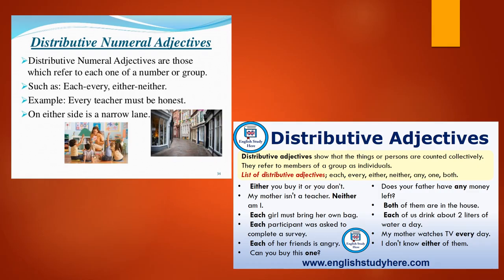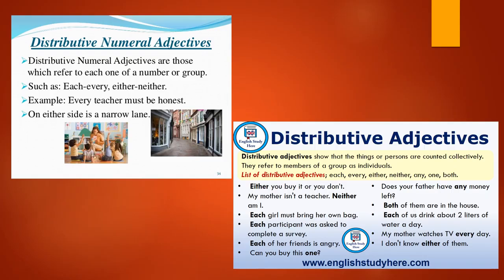In this slide we will learn about distributive numeral adjectives. Distributive numeral adjectives are those which refer to each one of a number or group. They show that things or persons are counted collectively and refer to members of a group as individuals. The list of distributive adjectives includes: each, every, either, neither, any, one, both. For example: Each girl performed in the drama. Every word of it is absolutely true. Either computer will do. Neither news is false. In these sentences, each, every, either and neither are distributive numeral adjectives. An adjective that refers to each one of a number is called a distributive numeral adjective.